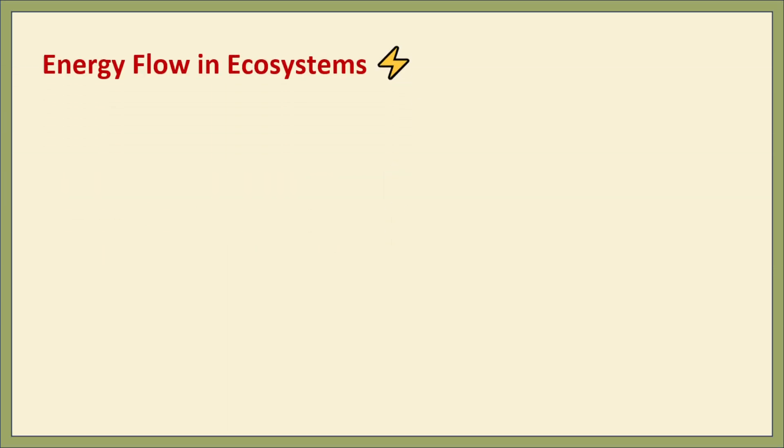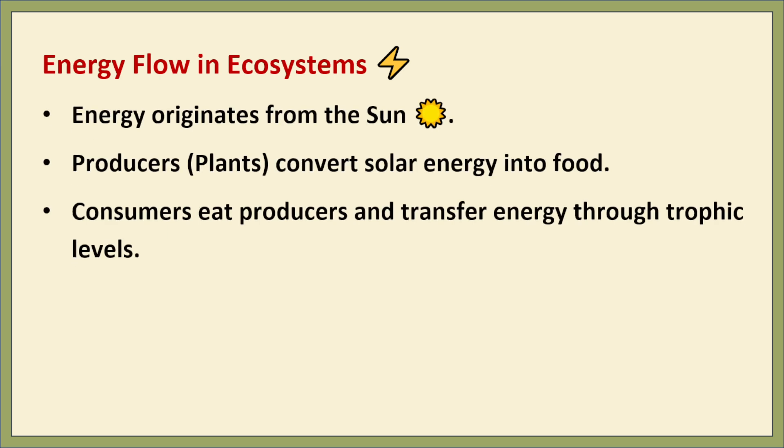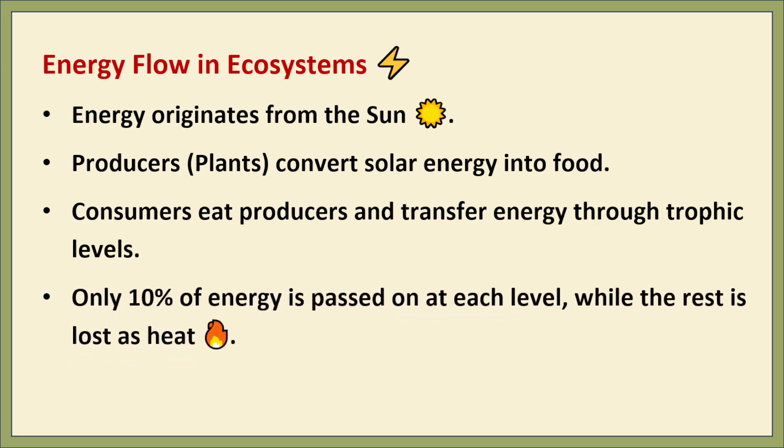Energy flow in an ecosystem is the transfer of energy from the sun to producers, then to consumers, and finally to decomposers. Producers such as plants and algae capture solar energy through photosynthesis, converting it into chemical energy stored in glucose. Herbivores consume producers, transferring energy to the next trophic level, while carnivores feed on herbivores. Decomposers like bacteria and fungi break down dead organisms, recycling nutrients back into the ecosystem. However, energy transfer is inefficient — only 10% of the energy at one trophic level is passed to the next, with the rest lost as heat through metabolic processes.